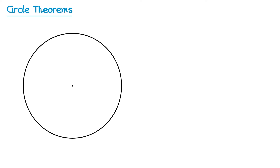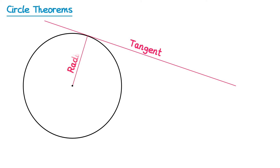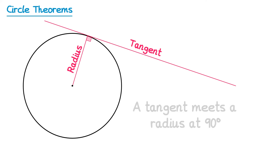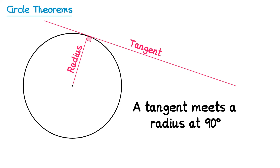For the next theorem we're going to draw a tangent to the circle. A tangent is a straight line that touches the circle in one place. We're then going to draw a radius from the centre of the circle to the point where the tangent also touches the circle. In this diagram, the angle between the tangent and radius will always be a right angle. So we can say for this theorem: a tangent meets a radius at 90 degrees.